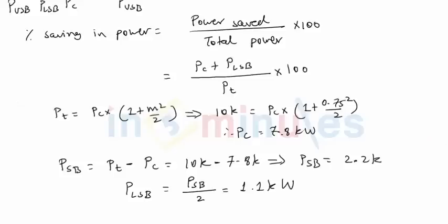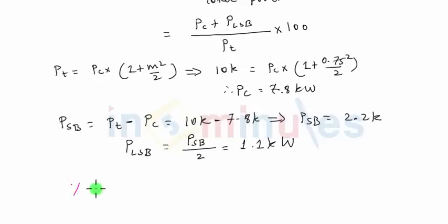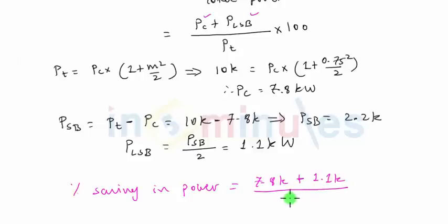So coming back to the formula that we have already written, percentage saving in power will be nothing but power of carrier and LSB that are saved. So carrier power is 7.8K plus LSB power is 1.1K, and this will be divided by the total power which is 10K, times 100.